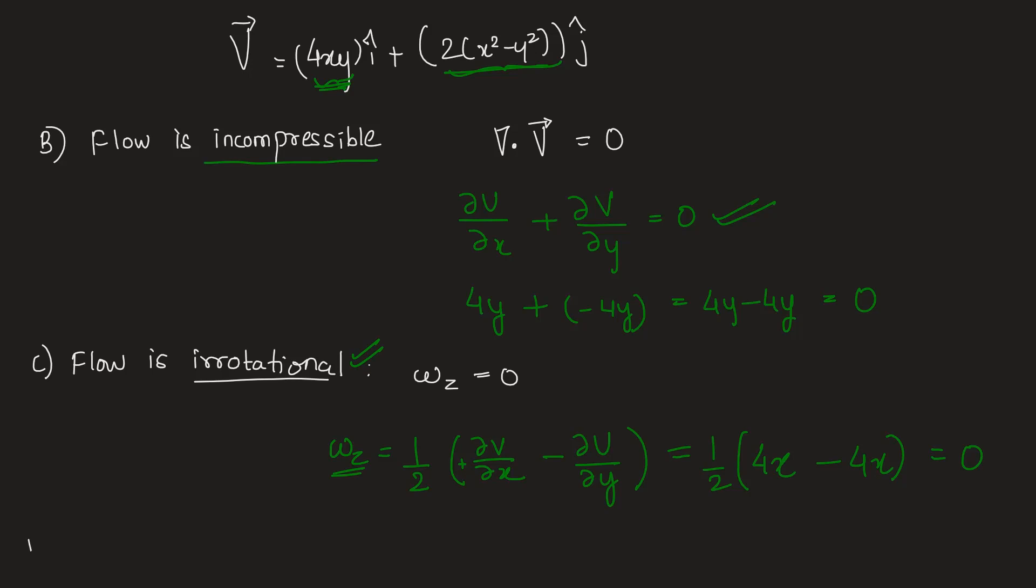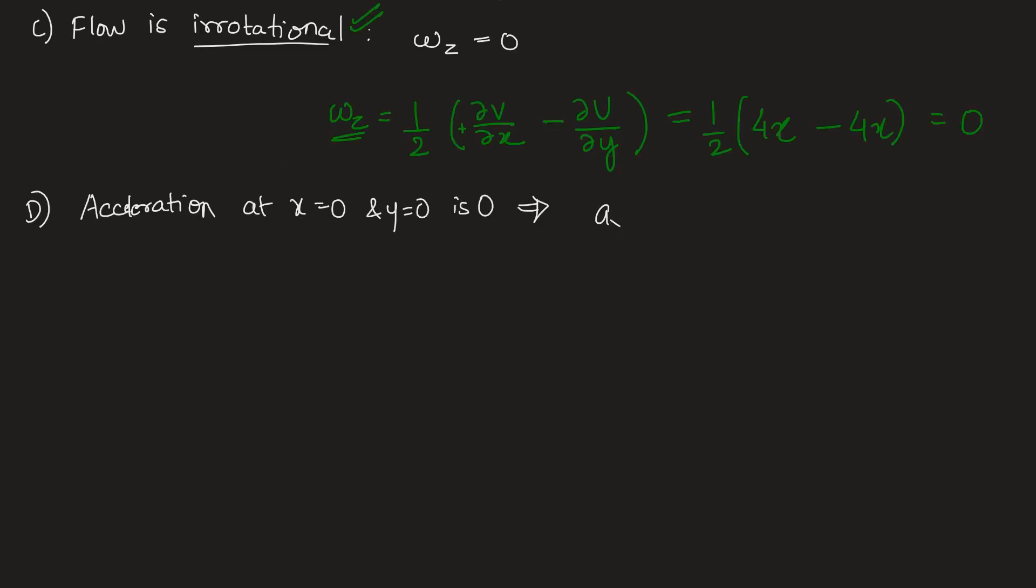C is also correct. Now option D asks whether acceleration at x equal to zero and y equal to zero is zero. To find the acceleration, Ax is the total derivative of u with respect to time. This total derivative is the sum of convective acceleration and local acceleration. Local acceleration is du/dt, while convective acceleration is u times partial u/partial x plus v times partial u/partial y.